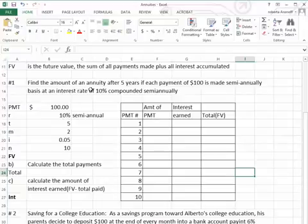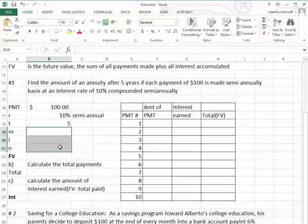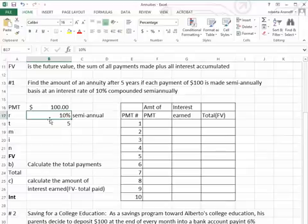Now let's take a look at an example. We want to find the future value of an annuity after five years when we make periodic payments of $100 semiannually based on a 10% interest rate compounded semiannually. And notice, since the payments and the interest are made at exactly the same time, this would be an ordinary annuity.